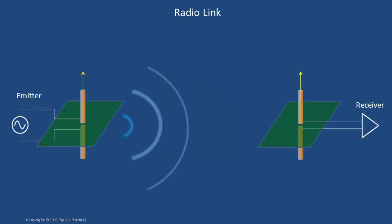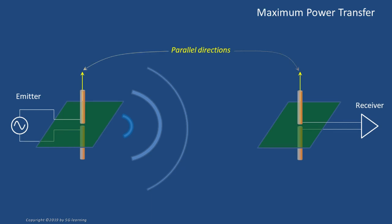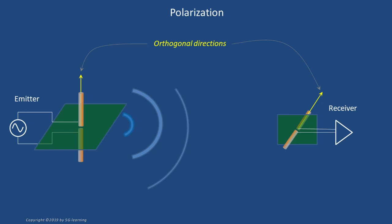A simple radiocommunications link may be built using one transmitter and one receiver, each equipped with a dipole antenna. If both antennas are set in parallel directions, maximum energy transfer takes place — the ideal setup. If on the other hand emitter and receiver antennas are orthogonal, energy transfer is poor, theoretically zero. The reason why energy transfer depends on the relative positions of transmitting and receiving antennas lies in the way they radiate and capture electromagnetic waves. We say that dipoles generate polarized waves, and we also say that the antennas are polarized.